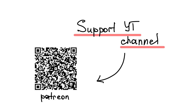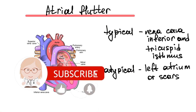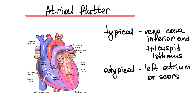Today we'll talk about atrial flutter and atrial fibrillation. Atrial flutter is a supraventricular tachycardia. This rhythm starts at the atrial chamber. Typical atrial flutter involves the vena cava inferior and tricuspid isthmus in the reentry circuit.